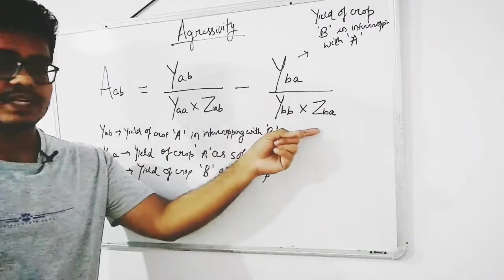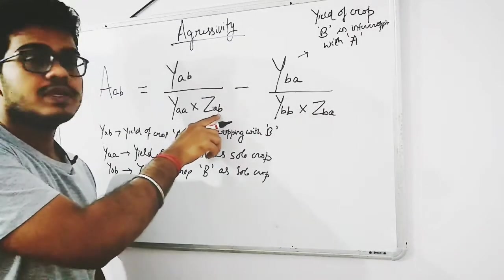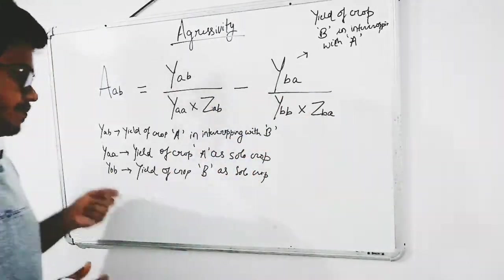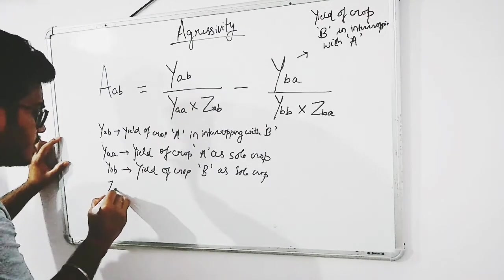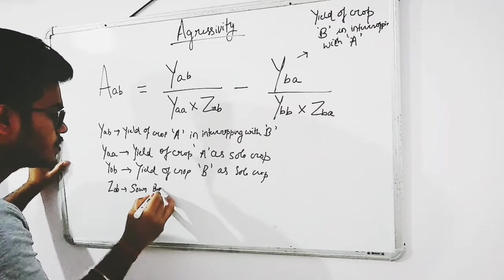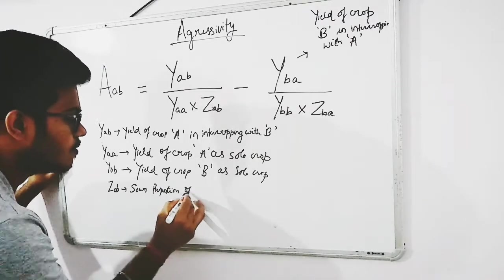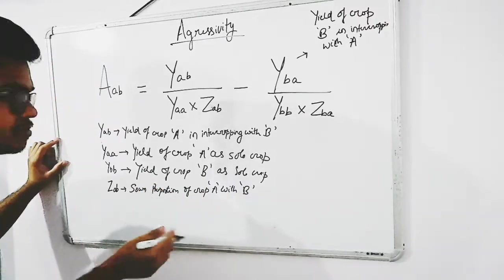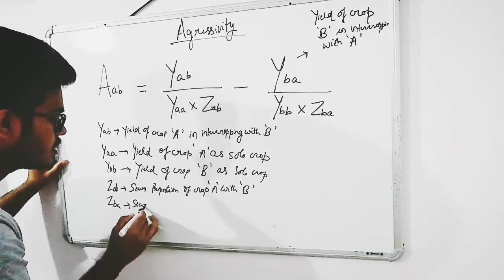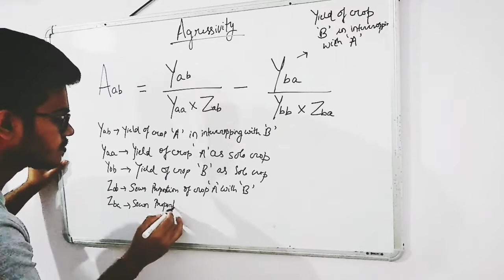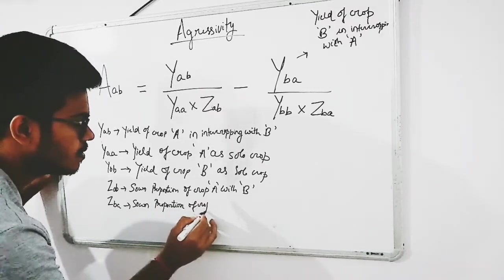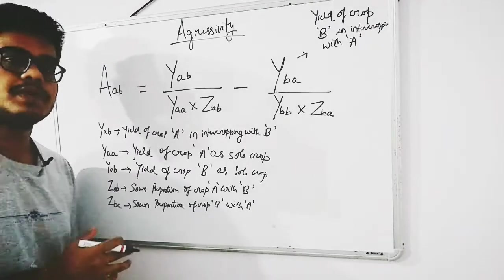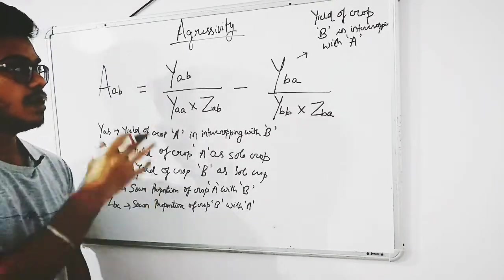ZAB is the sown proportion of crop A grown in mixture with crop B, and ZBA is the sown proportion of crop B when grown in mixture with crop A. This completes the explanation of all the values used in the aggressivity formula.